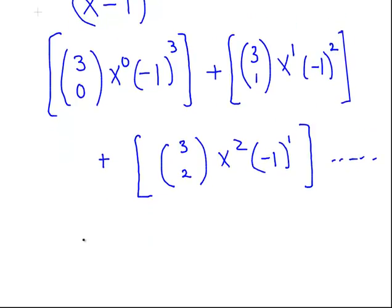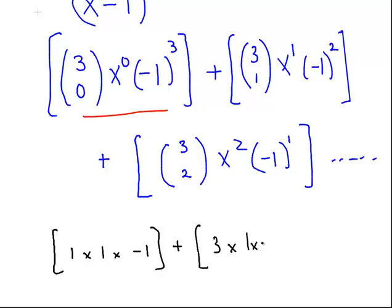So that works out as, from 3 choose 0, that's 1, I'll do it in black here, 1 times 1 times minus 1 cubed is minus 1, so that's the first one there. Now we'll do the next one. From 3 choose 1, that's 3, times x, times minus 1 squared is just 1. So 3 times x times 1.